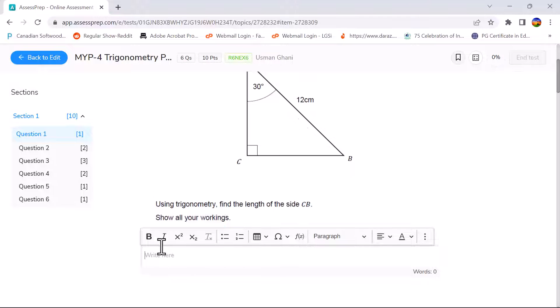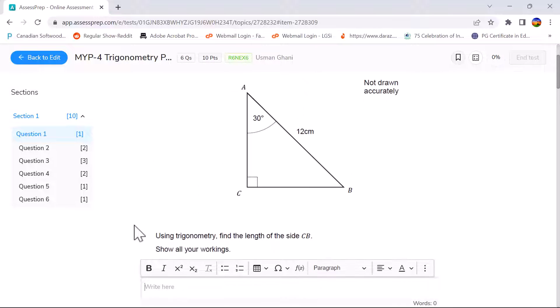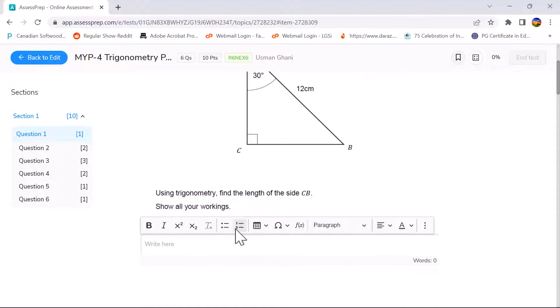Now in order to solve this question we will use the concept of trigonometry to find out the side CB. Your first step is always to label the sides, so side CB is the opposite and 12 is the hypotenuse. The formula that connects the opposite and the hypotenuse is going to be sine. So sine of 30 is equal to CB which is X in this case divided by 12.